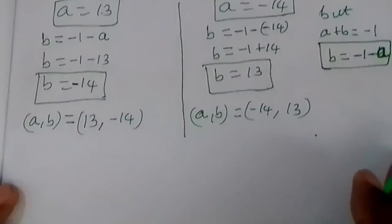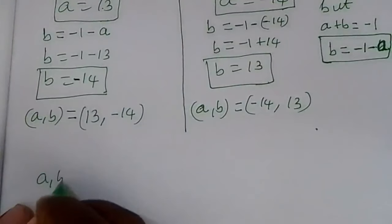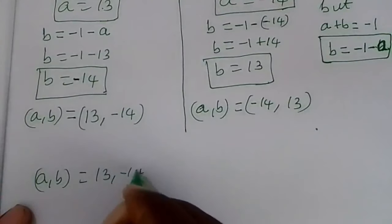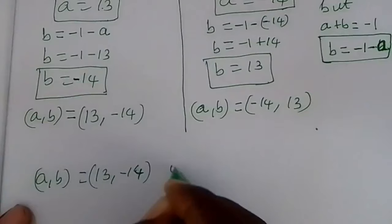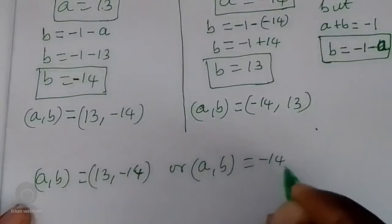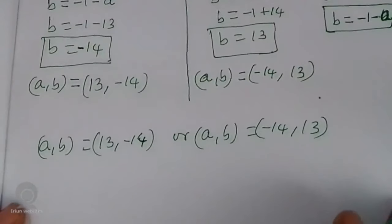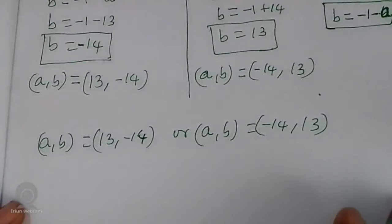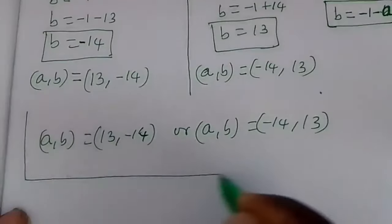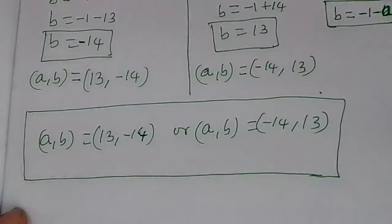We can conclude that a comma p equals 13 comma negative 14, or a comma p equals negative 14 comma 13. These are the values that satisfy our system of equations. Thank you for watching. Please subscribe to my channel and turn on the notification bell. Don't forget to smash the like button, share, and comment.